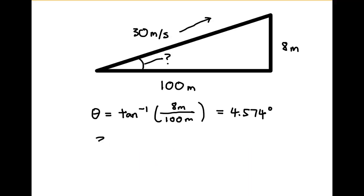We already know the angle of elevation, which is 4.574 degrees. Using cosine, we can find the x component of the velocity, which is 29.9 meters per second.